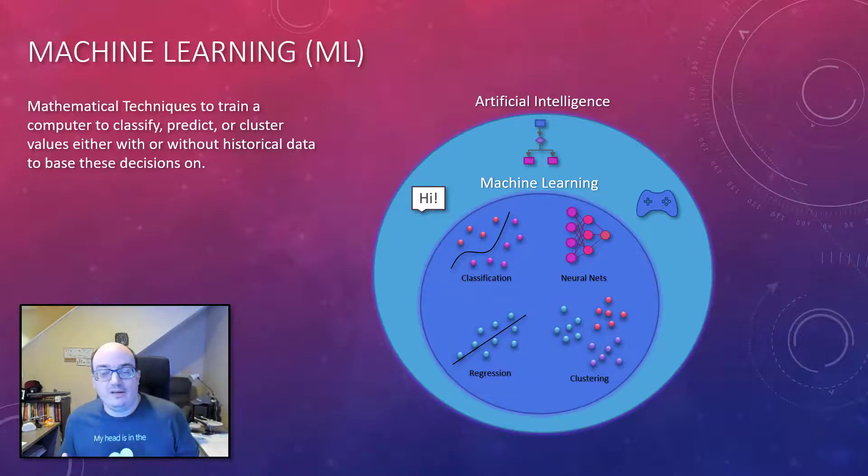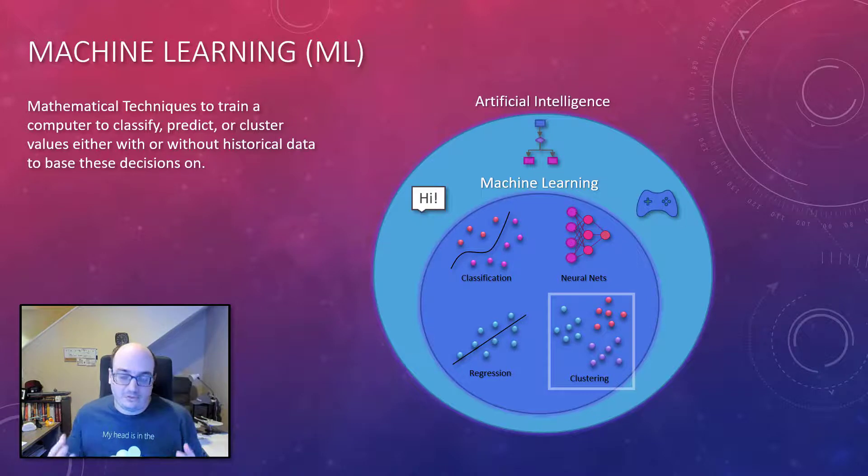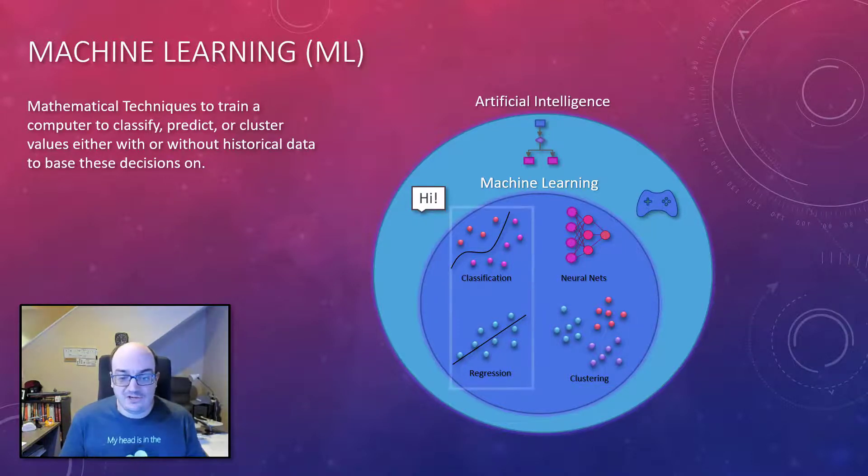We also have clustering. This is more of having a machine learning algorithm go in and say, hey, which things are closest to each other? Are there any groupings of my data? And it can actually find groupings that you didn't even know necessarily existed. It's looking at all the different aspects of your data, which can help you identify things like marketing groups. That's clustering. And the cool thing about clustering is you don't necessarily need historical data. It just looks at the data you have now. So that's a form of unsupervised learning versus classification and regression. You really need to supervise it.